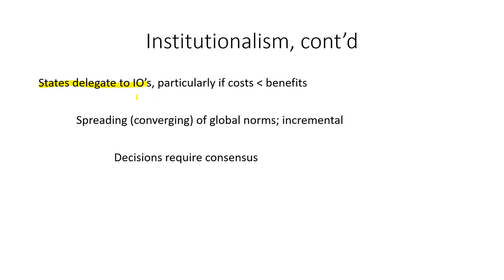The institutionalist perspective also looks at the idea that states delegate things to international organizations, particularly when the costs are less than the benefits — when it's more practical to address an issue on a global scale rather than each state pursuing it on its own. It also examines the spreading and converging of global norms in an incremental evolution: keeping peace, protecting the environment, women's rights, human rights, and disease containment are all global issues on which states converge around certain norms.